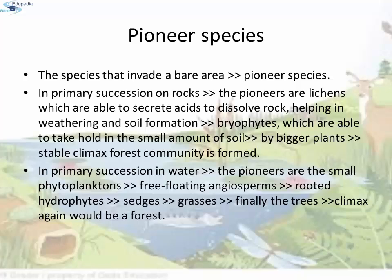In primary succession in water, the pioneers are small phytoplanktons. They are replaced with time by free-floating angiosperms, then by rooted hydrophytes, sedges, grasses, and finally trees. The climax again would be a forest. With time, the water body is converted into land.